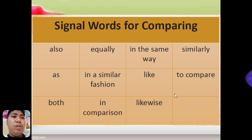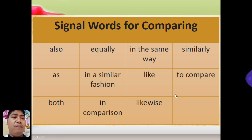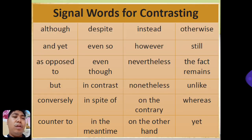Here are the signal words you can use in comparing: also, equally, in the same way, similarly, as, in similar fashion, like, and many others. Here are also words that signal contrasting: although, despite, instead, otherwise, and yet, and many others.